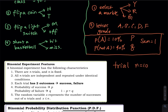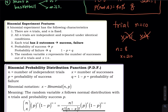Each trial has two outcomes: either a success or a failure. The random variable X represents the number of successes out of n trials, so X must be less than or equal to n. If you flip a coin 10 times, you can't get 11 heads. If you shoot a basketball 8 times, you get 8 results. X can be zero — you might miss all eight shots, so the number of successes is zero.